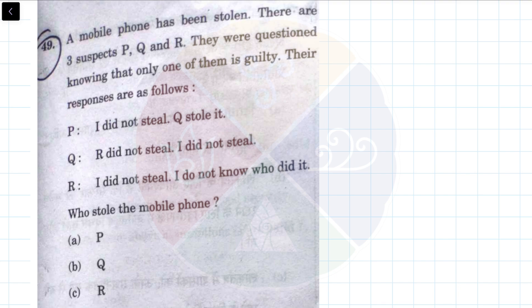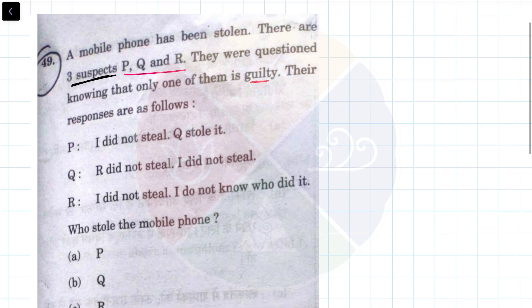If a mobile phone has been stolen, there are three suspects: P, Q, and R. They were questioned knowing that only one of them is guilty. A mobile has been stolen and there are three suspects, P, Q, and R. Only one of them is guilty.